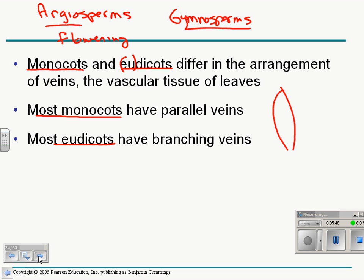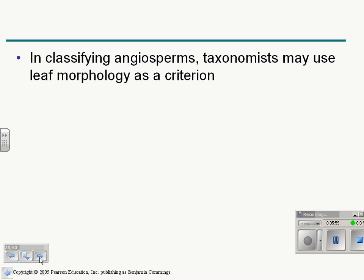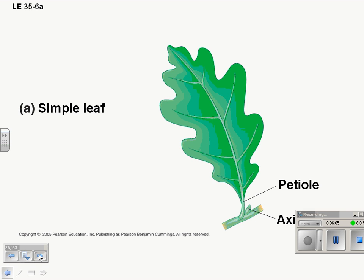Monocots have parallel veins. It means their veins run parallel to the surface of the leaf, the edge of the leaf. Dicots have branching veins, a main vein surrounded by other branching veins. So, a lot of times, people use how a leaf looks as the criterion. Here's a dicot leaf, branching veins.